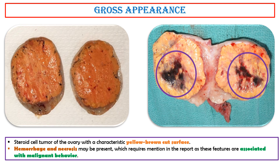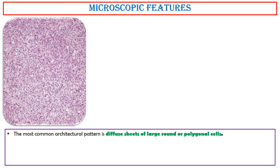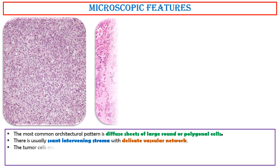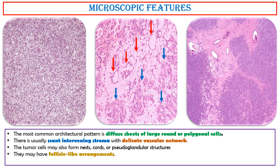Hemorrhage and necrosis may be present, which requires mention in the report, as these features are associated with malignant behavior. Microscopically, the most common architectural pattern is diffuse sheets of large round or polygonal cells. There is usually scant intervening stroma with a delicate vascular network. The tumor cells may also form nests, cords, or pseudoglandular structures, and may have follicle-like arrangements. Some cases show thick hyalinized fibrous bands.